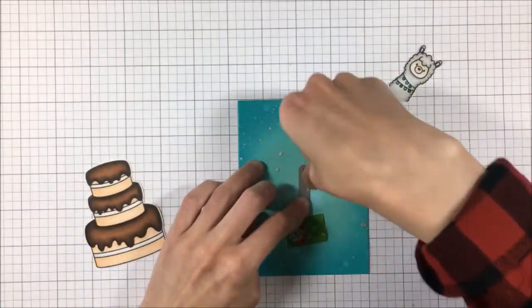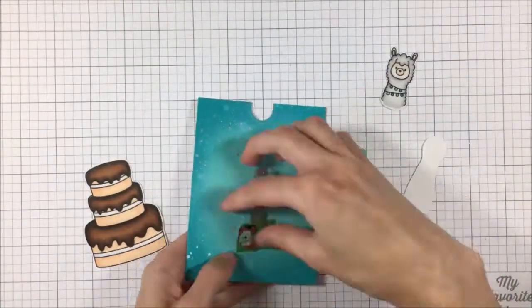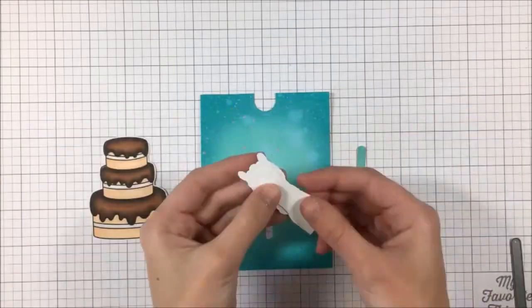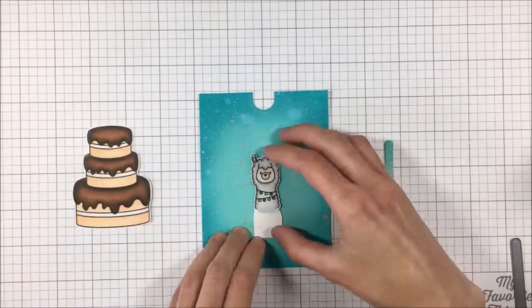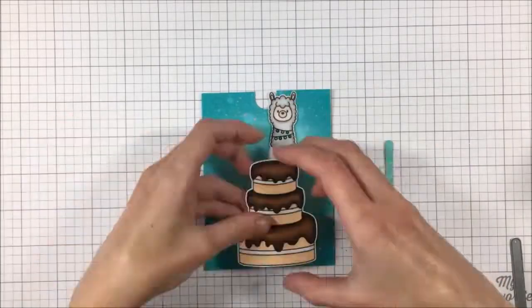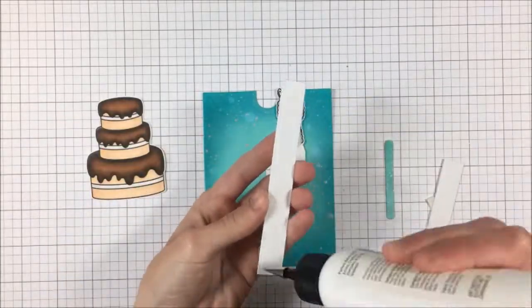Then I took one of these dies - this is from Lawn Fawn Slide On Over - and I just cut a little channel behind the cake because this is what our llama is going to slide through. I added my piece to the back of him to make him a bit more sturdy, and then I'm just planning out where he's going to slide to.